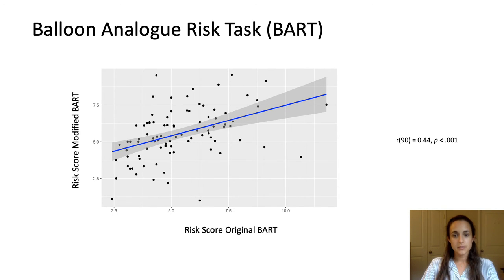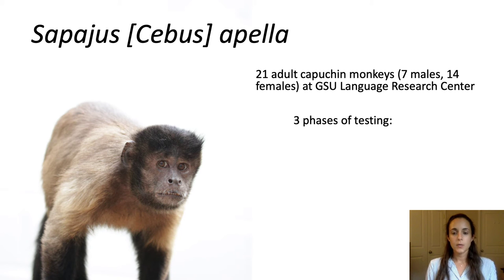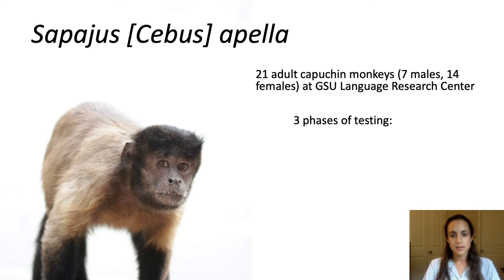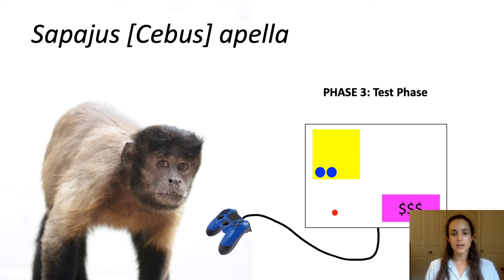We then brought the task to our capuchin monkeys, testing 21 adult capuchins that live at the Georgia State University Language Research Center. All testing was voluntary. They have extensive training in joystick computer testing, so they did not need to learn how to use a joystick. They all completed 16 to 20 sessions — some individuals just didn't want to play after 16 sessions. In their final phase, they could accrue as many or as few tokens as they would like and then be allowed to cash out.